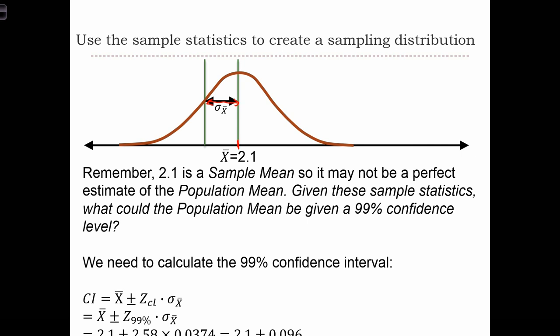So the confidence interval equation, and I'm sorry that this got cut off, so let me rewrite it, is x-bar plus or minus z 99% times the standard error. So we have x-bar is 2.1 plus or minus 2.58 is the z-score. And the standard error of the mean is 0.0374, which gives us 0.096. So the confidence interval, and I think I've got it on the next slide,